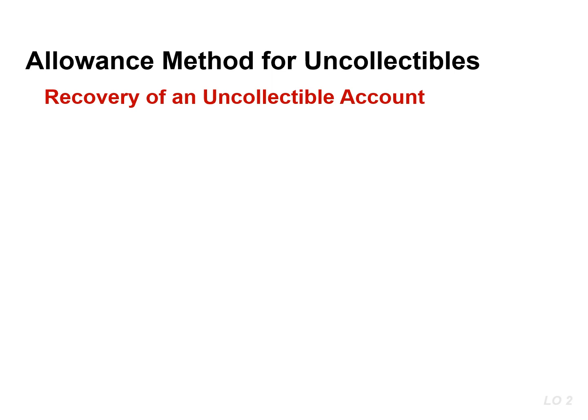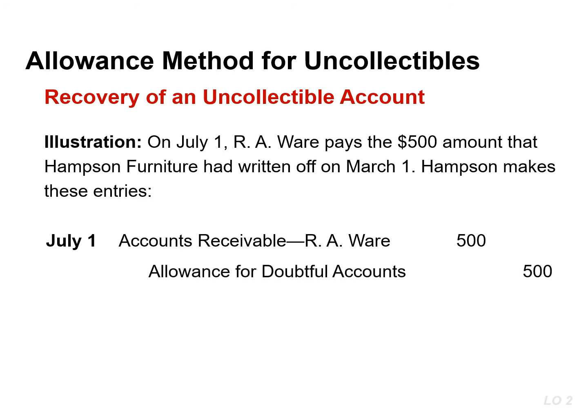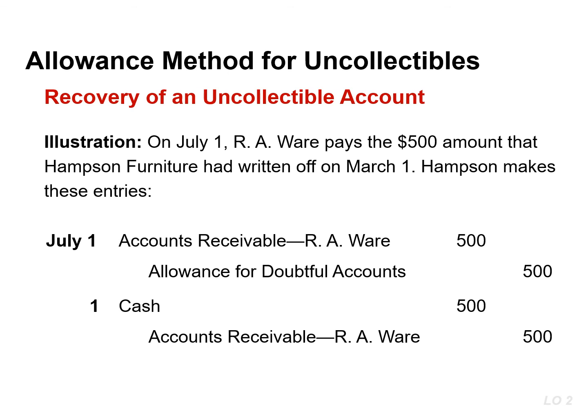The company makes two entries to record the recovery of a bad debt. The first entry reverses the write-off and reinstates the customer's account. The second entry records the collection of the receivable as well as cash. To illustrate, assume that on July 1, R.A. Ware pays the $500 that Hampson Company had written off on March 1. First, Hampson debits accounts receivable — R.A. Ware — and credits allowance for doubtful accounts for $500, reinstating the account. The next entry debits cash and credits accounts receivable — R.A. Ware — for $500 to record the collection.